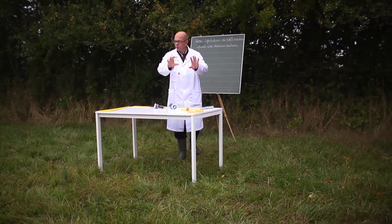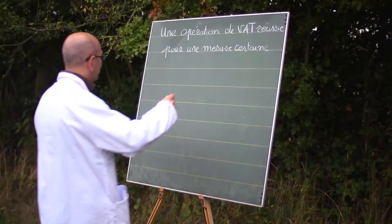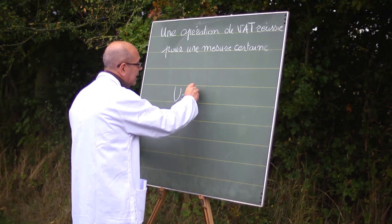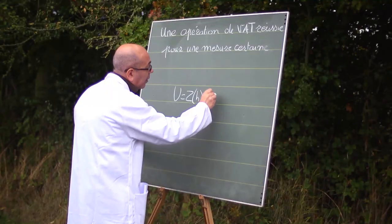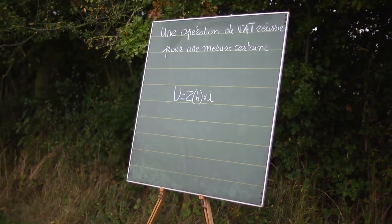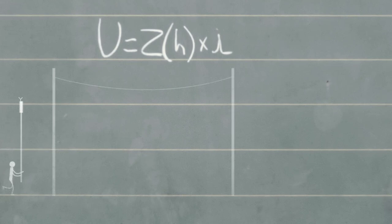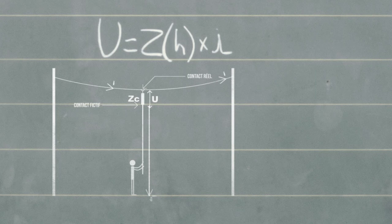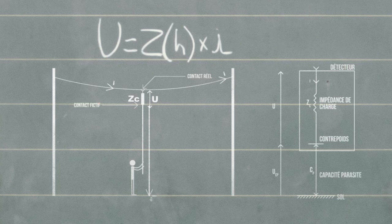Some very simple explanation on my tableau. U is equal Z×h×i. Here you have the current I, which traverses the impedance ZC, creating a difference of potential. The device measures the difference of potential U between the real contact and the fictive. Some elements, such as the height, the position of the device or the presence of a perturbator can alter the measure of this difference of potential.